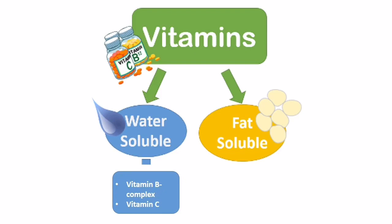Fat-soluble vitamins are stored in the fat tissues of our organs such as liver, kidney, and muscles. These vitamins are used whenever the body needs them, for example for maintenance of skin and bones, and when not needed, they remain stored in the tissues. The types of fat-soluble vitamins are Vitamin A, D, E, and K.